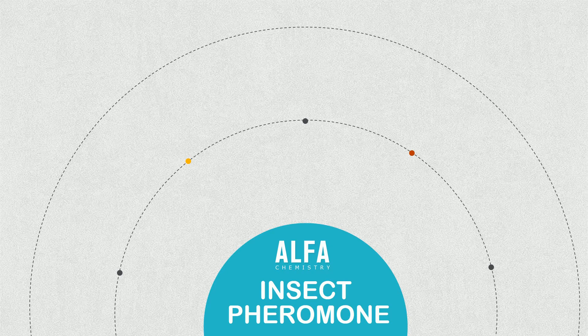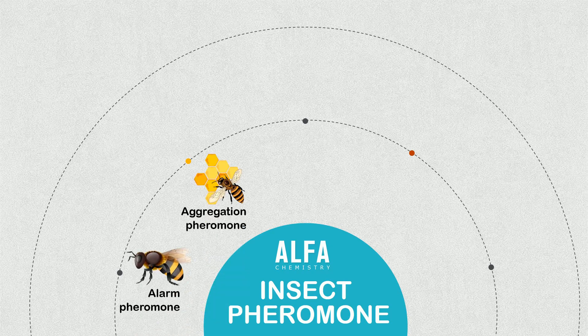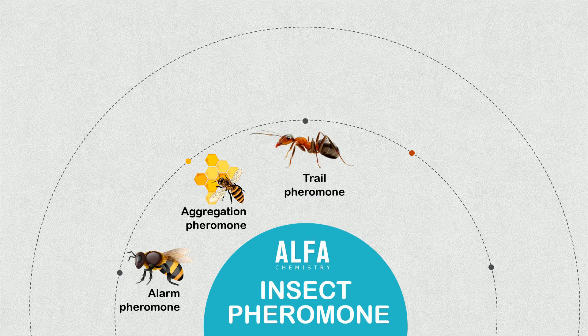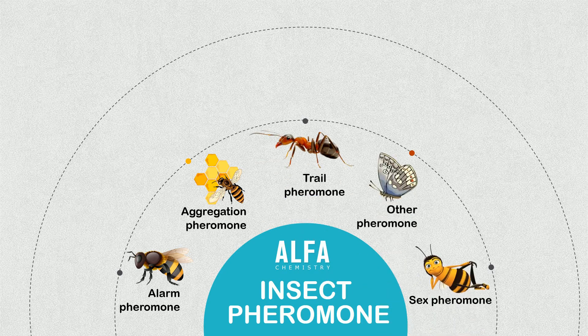Insect pheromones can be mainly divided into the following species and functions: aggregation pheromone, alarm pheromone, trail pheromone, sex pheromone, and other pheromones.